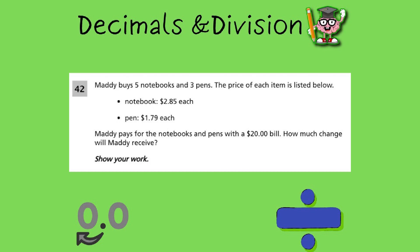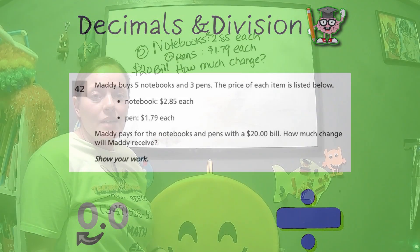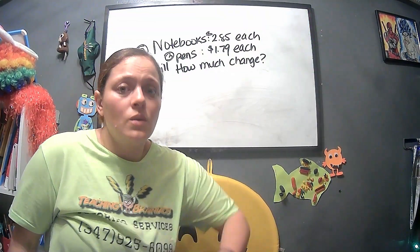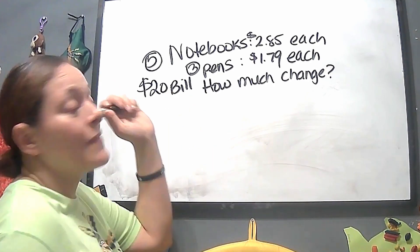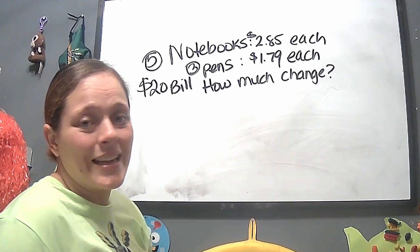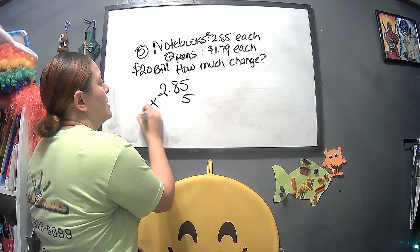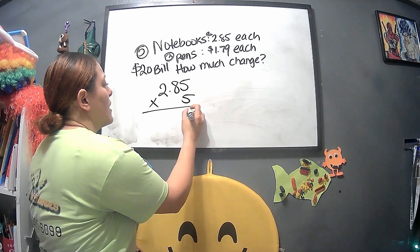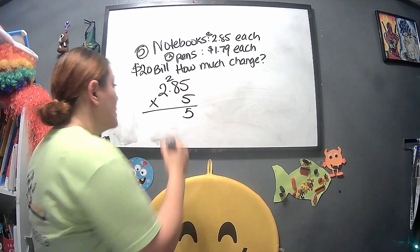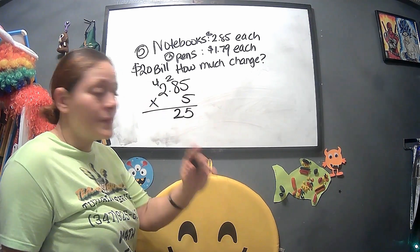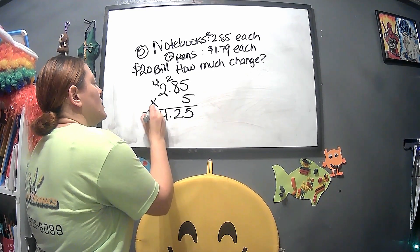Next problem: Maddie buys five notebooks and three pens. Each notebook costs $2.85 and each pen costs $1.79. Maddie pays with a $20 bill — how much change will she receive? This is a multi-step problem, so show all your work. For five notebooks at $2.85 each: 2.85 times 5 — five times five is 25, eight times five is 40 plus two is 42, five times two is ten plus four is 14. So five notebooks cost $14.25.